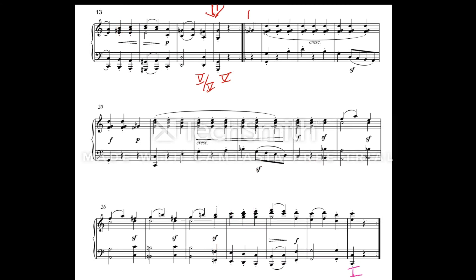Next, we need to determine whether our binary form is simple or rounded. If rounded, the very beginning motive or melody would return in the second section of the piece.